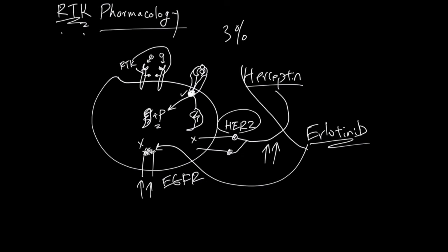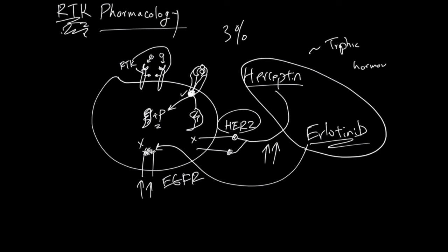Overall, the pharmaceutical molecules that go against RTKs try to mimic trophic hormones. These are hormones that have more specificity than general hormones like glucocorticoid hormones. For example, insulin is part of this group.